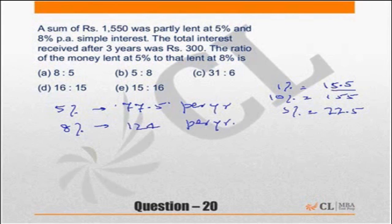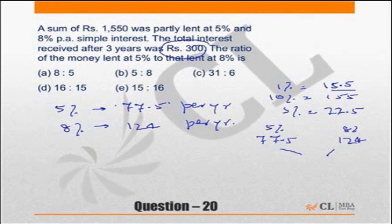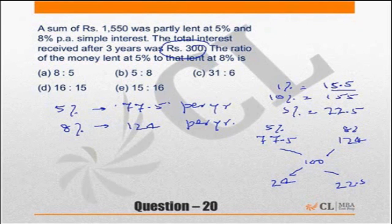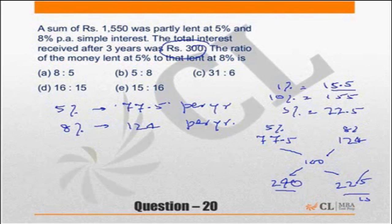When you mix interest of ₹77.5 (at 5%) with interest of ₹124 (at 8%), the average interest you actually receive is ₹100 per year (₹300 over 3 years). The allegation gives differences of 24 and 22.5, so the ratio of quantities is 24:22.5, which is 240:225, which simplifies to 16:15. So the ratio of amounts lent at 5% to 8% is 16:15.